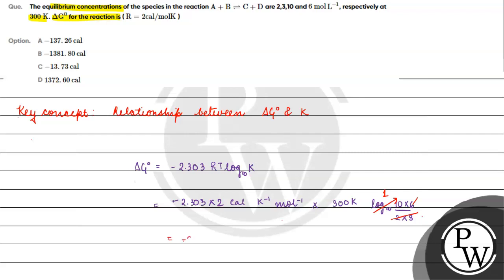So we get minus 2.303 times 2 times 300. Calculating this we get minus 1381.8 calories. The answer for this question is option B.